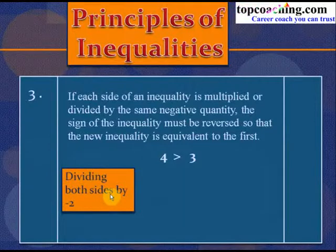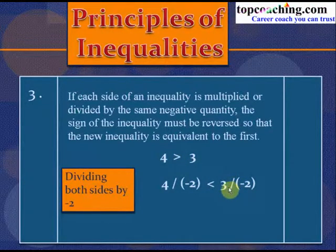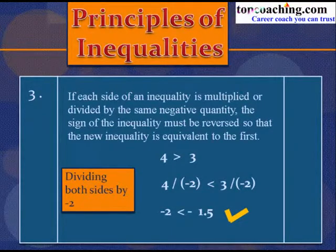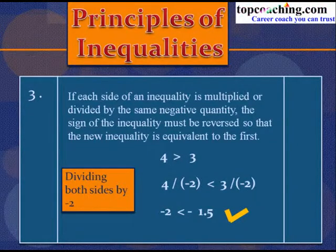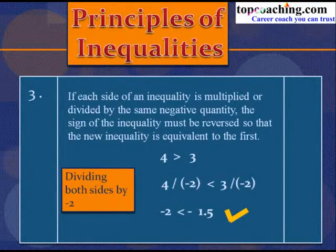Similarly, dividing both sides of 4 > 3 by −2 and reversing the sign: 4÷(−2) < 3÷(−2), giving −2 < −1.5, which is true. So whether multiplying or dividing by a negative quantity, we must change the sign of the inequality — greater than becomes less than, and vice versa.